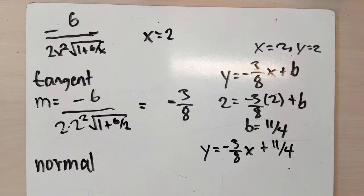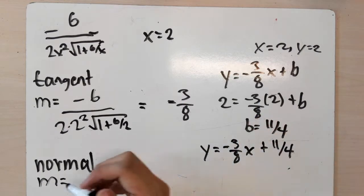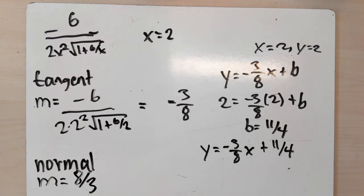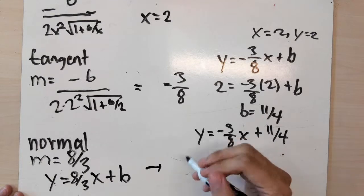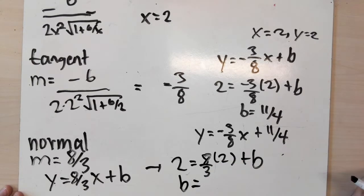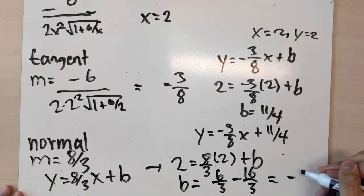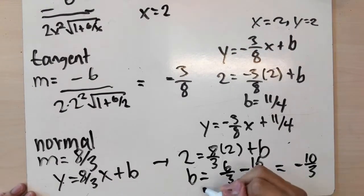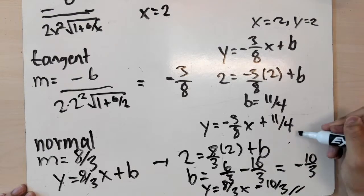The normal is simply the line perpendicular to the tangent. To find it, take the negative reciprocal of the tangent slope: the normal slope is 8 over 3. So y equals 8 over 3 times x plus b. Since y equals 2 when x equals 2: 2 equals (8 over 3)(2) plus b, so b equals 6 over 3 minus 16 over 3, which equals negative 10 over 3. Therefore the normal line is y equals 8 over 3 times x minus 10 over 3. Thank you.